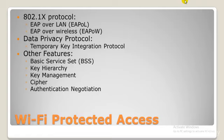Some of the significant changes implemented with WPA included a message integrity check to determine if an attacker had captured or altered packets passed between the access point and the client, and the Temporal Key Integrity Protocol — TKIP. TKIP employs a per-packet key system that was radically more secure than what was used in the WEP system.